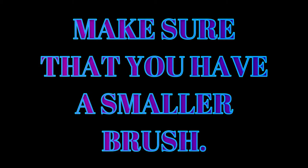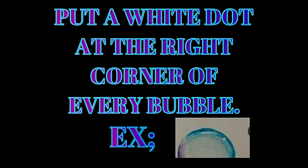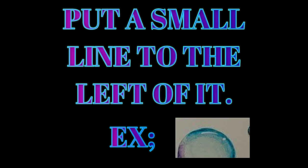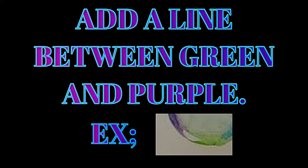Now that we're done blending, we're going to get some white paint and make sure you have a smaller brush. Make sure your brush is dry. Now you're going to get a little bit of white paint and put a dot at the right corner of every one of them. Now you're going to put a small line to the left of it. Lastly, you're going to add a line between green and purple.